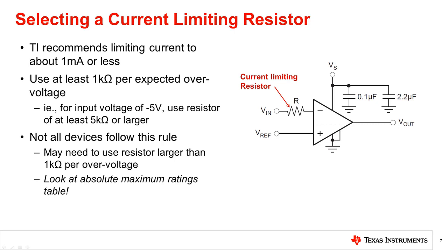However, not all devices follow this rule. Some devices require the input to be limited to a voltage more positive or closer to ground than negative 0.5 volts, so the current limiting resistor may need to be larger than 1 kilo-ohm per volt. You will need to look at the absolute maximum ratings table of the device to see how much resistance you need to limit the current.